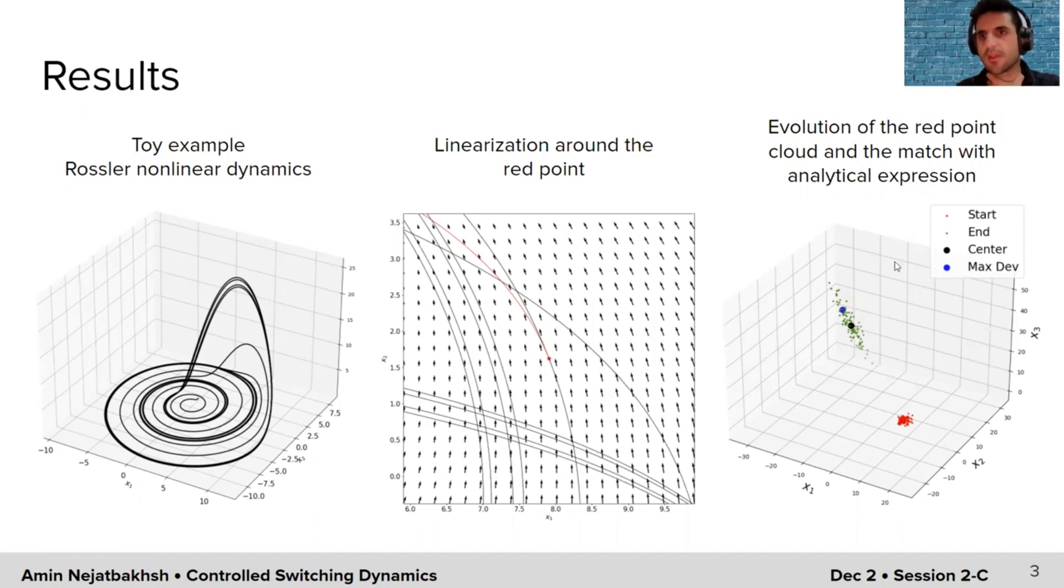On the right side, we see this analytical expression that gives us the maximally informative direction of the evolution of this red point cloud. We start from this red point cloud, we evolve this red point cloud according to some linear dynamics here given by the Jacobian, and each of these points will eventually go to another point which is represented by this green point cloud. There is a direction that has the most variance in the final point cloud. That direction, we don't need to sample from the points, we know the analytical expression for that direction.